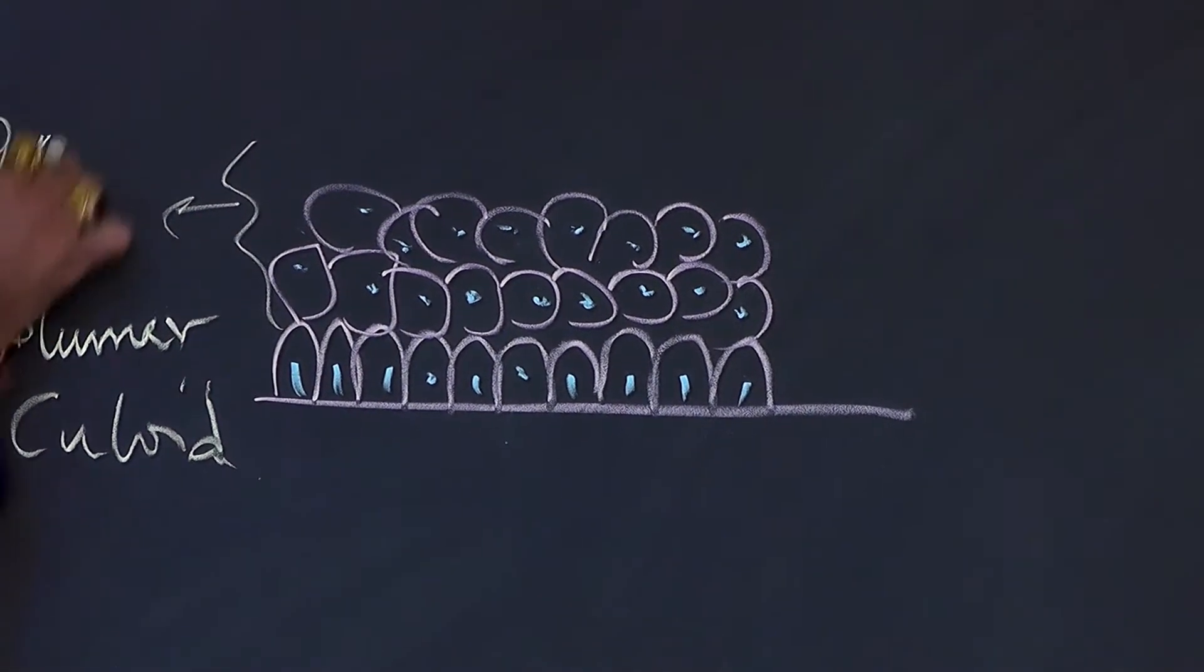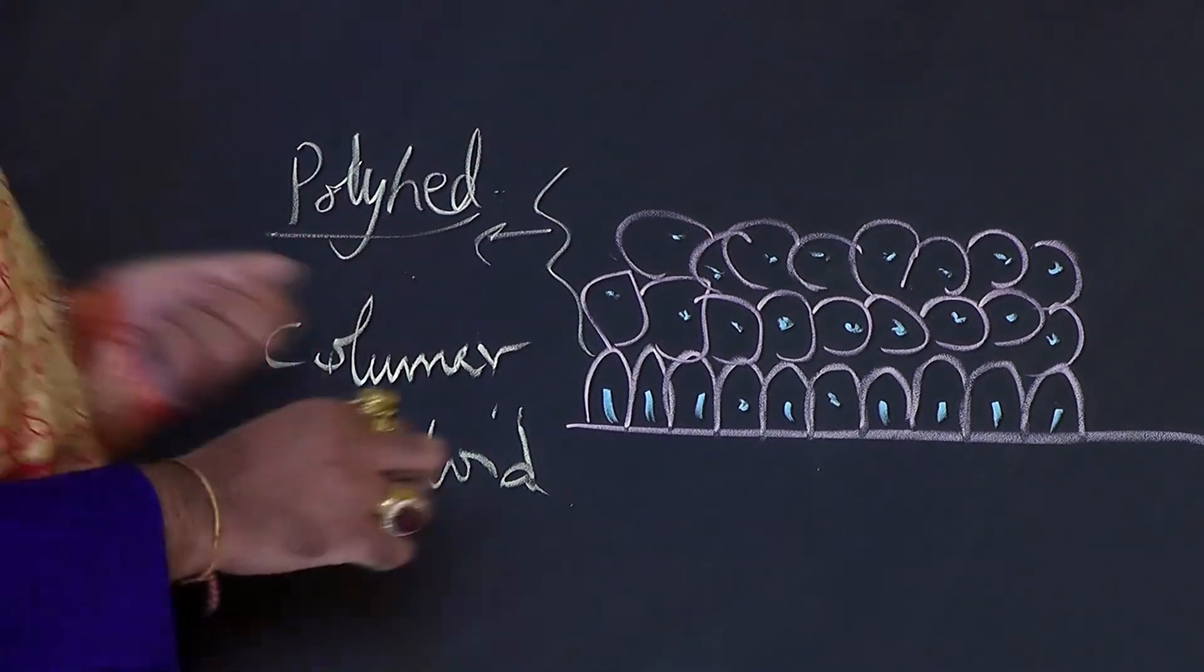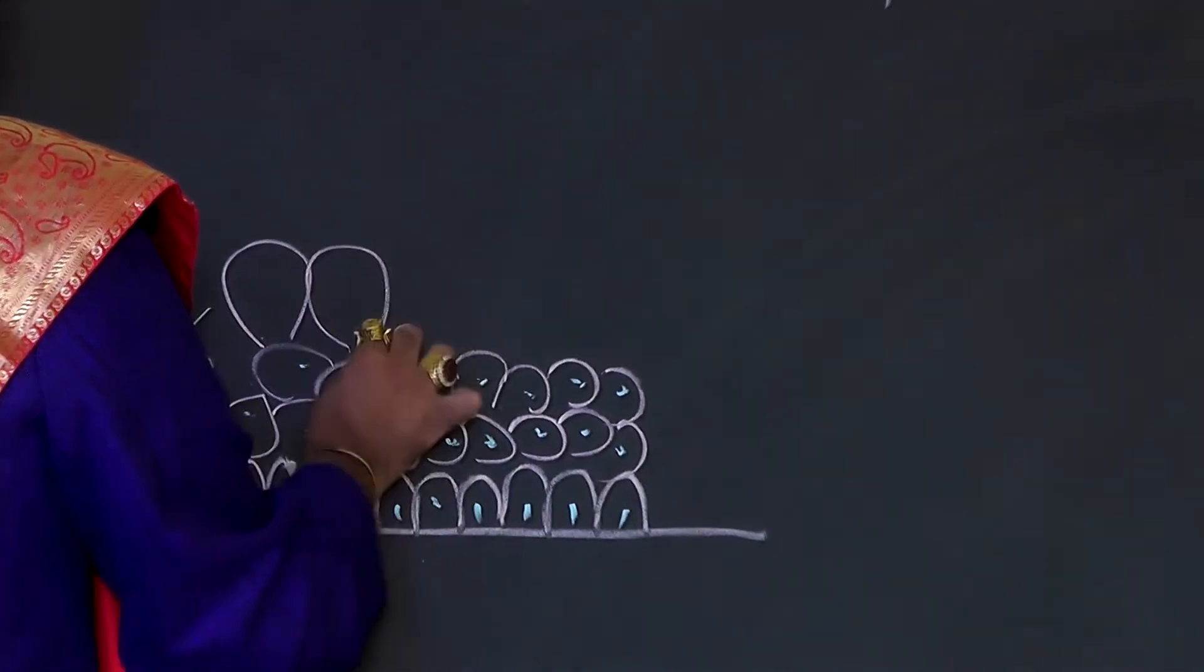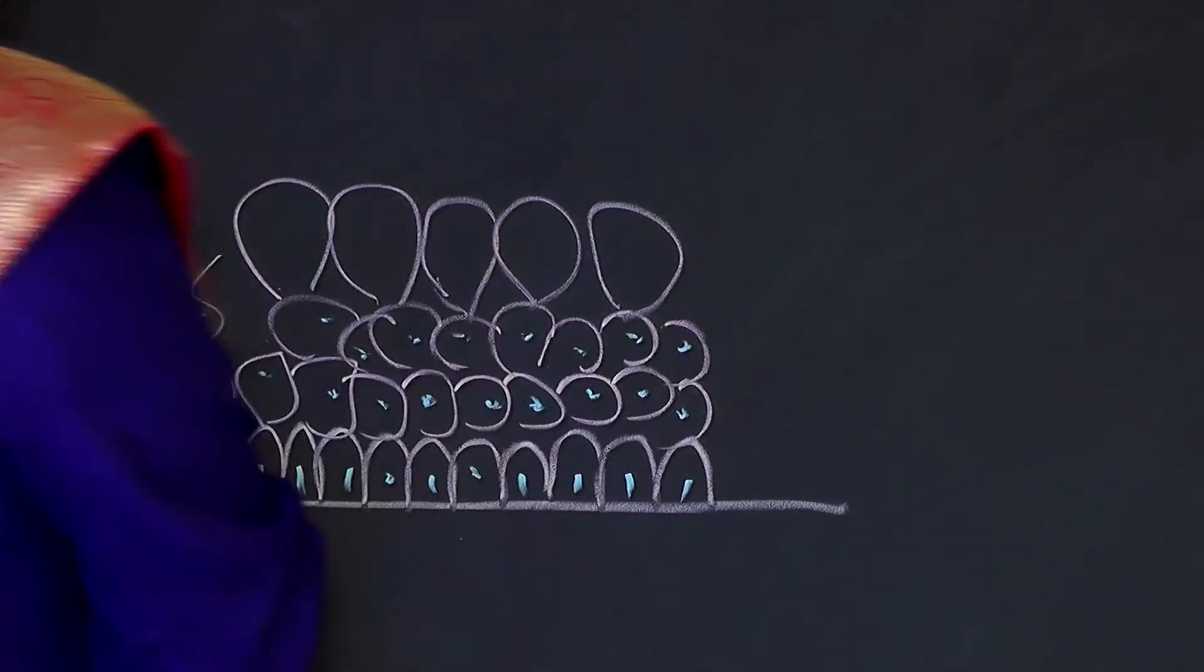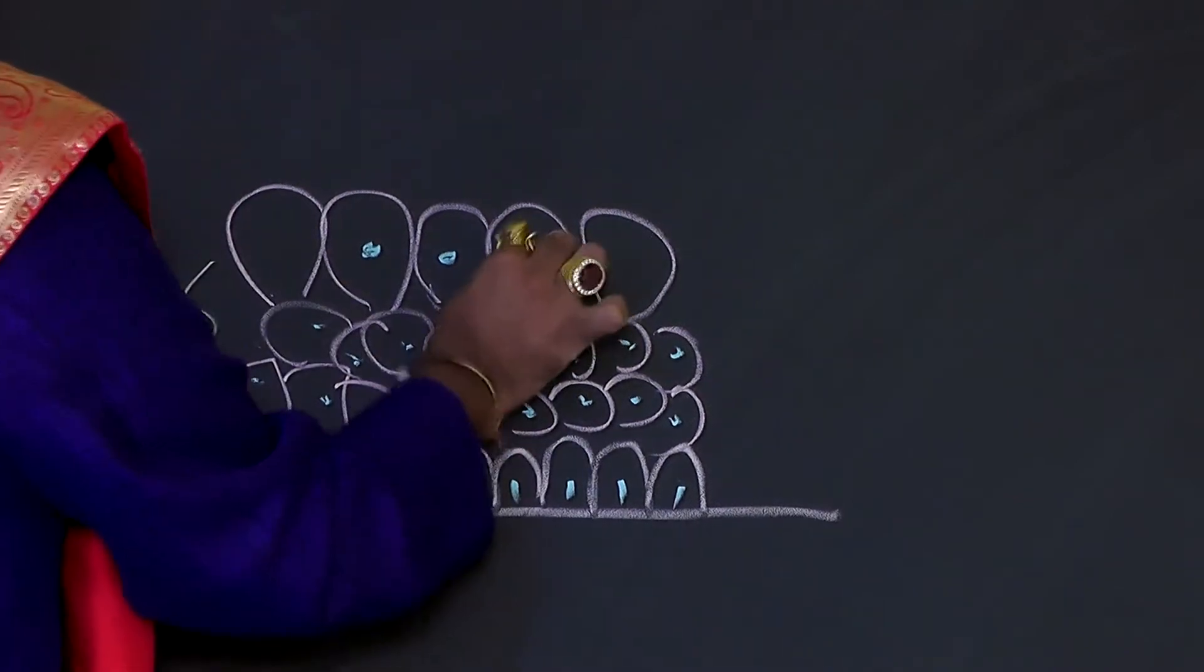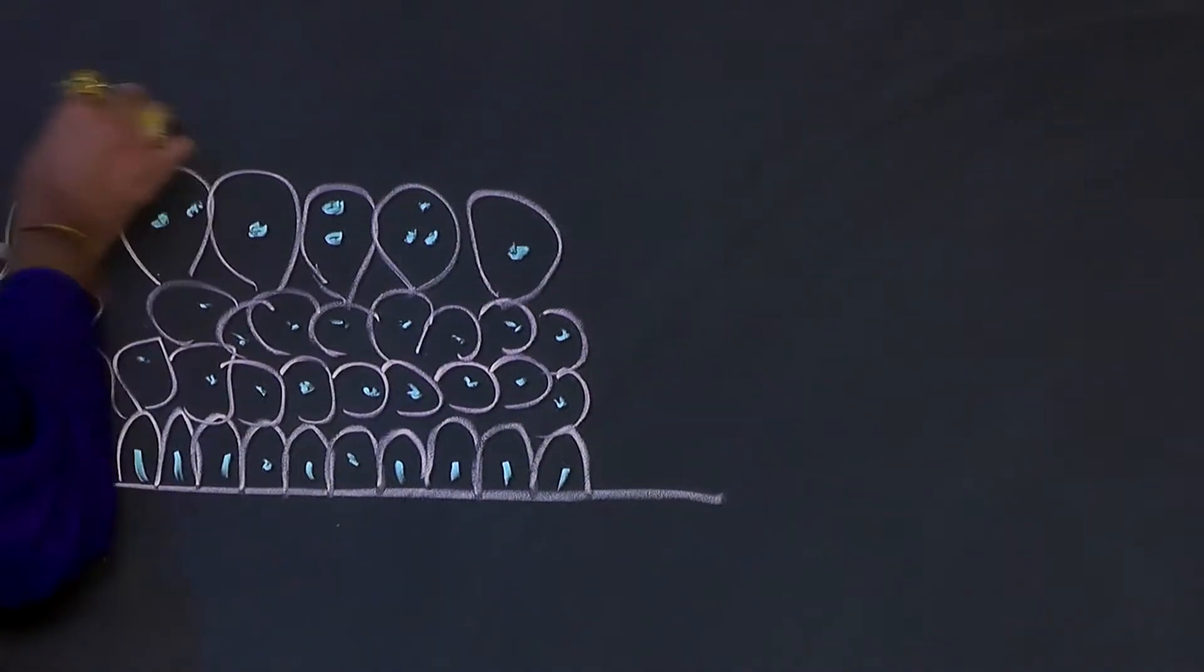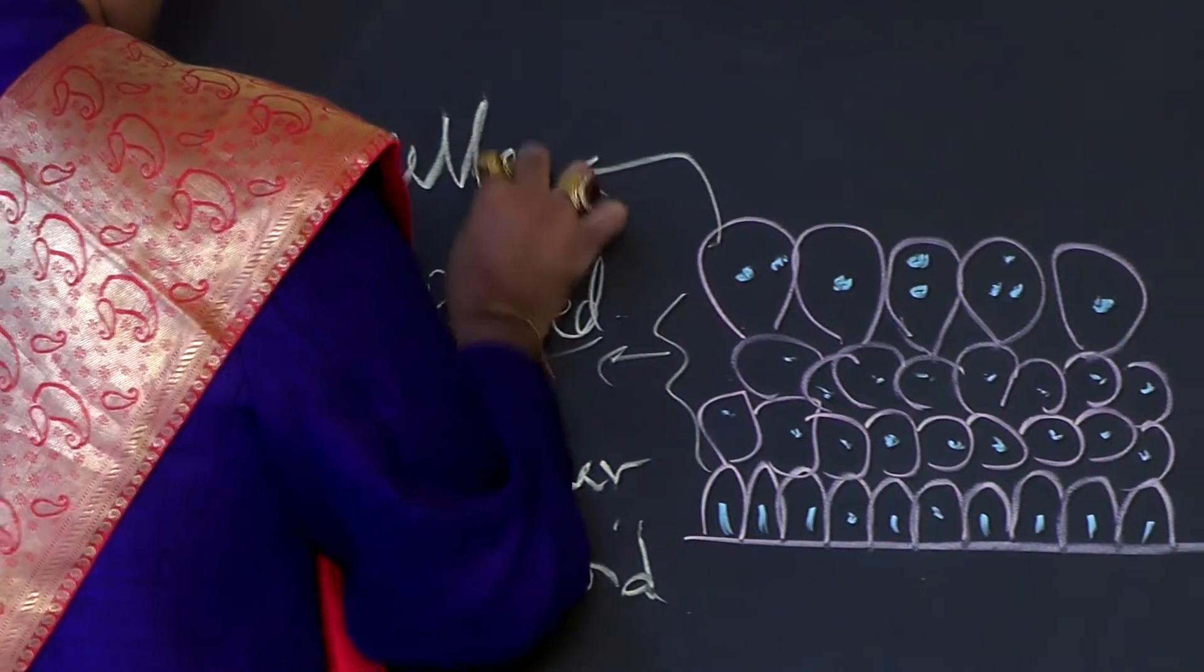Above these, you have cells which are larger in size and may have two or three nuclei. Generally cells have only one nucleus, but these umbrella cells may be multi-nucleated. These topmost cells are called umbrella cells or dome-shaped cells.